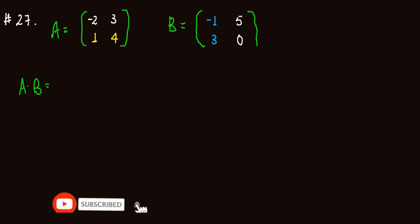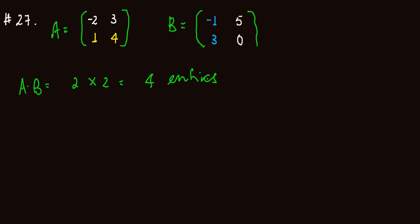Matrix A times matrix B is the dot product of the rows of A with the columns of B. There are two rows in A and two columns in B, therefore we will get four entries in the resulting matrix.